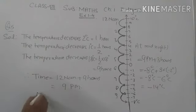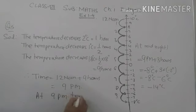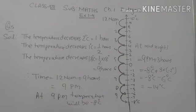At 9 PM, temperature will be 8 degrees centigrade below zero — below zero means minus 8 degrees centigrade.